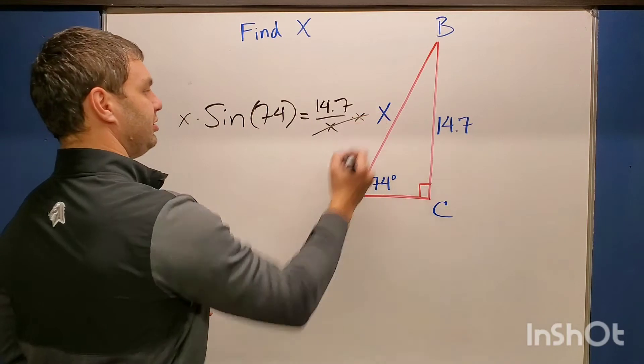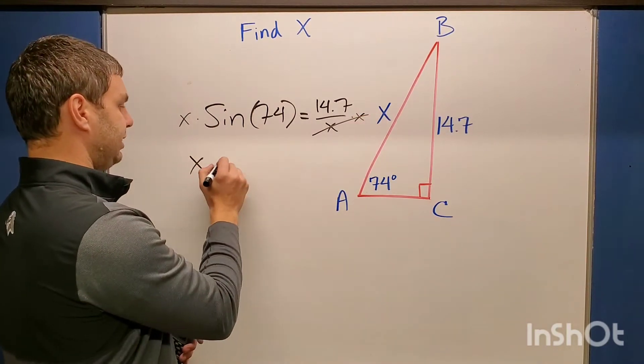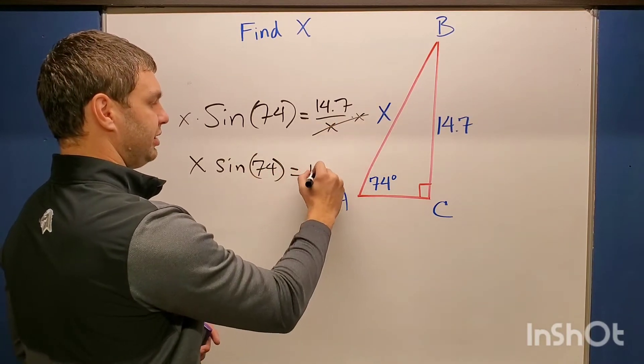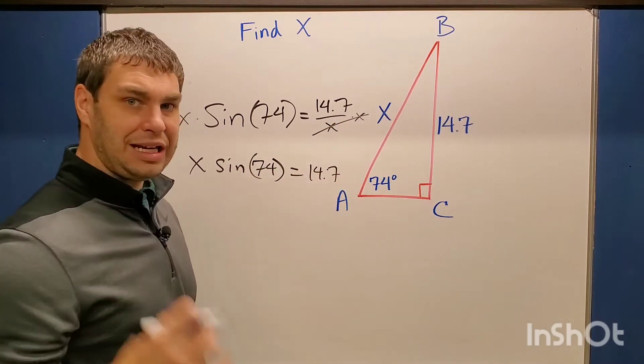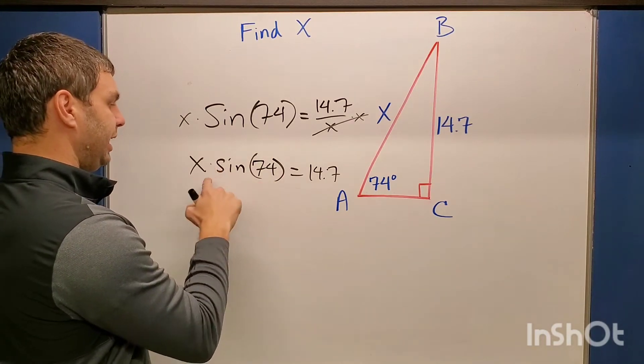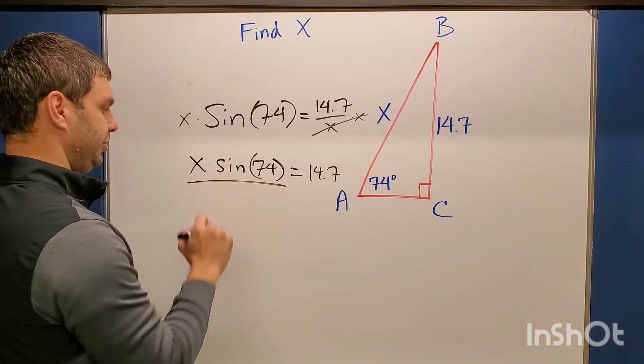Let's multiply both sides by X. This gives me X times sine of 74 degrees equals 14.7. And now to get the X isolated by itself, I need to divide by sine of 74 since it's currently being multiplied.